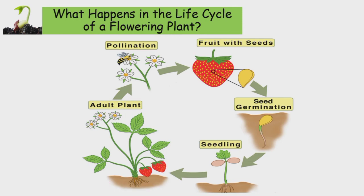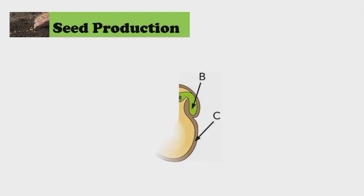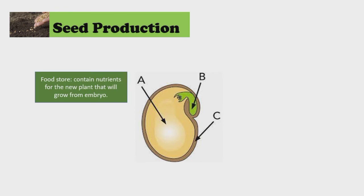Now let's discuss each stage one by one. The first stage is seed production. A seed is made of three main parts: an embryo, seed leaves, and a seed coat. The seed leaves are the food store — they contain nutrients for the new plant that will grow from the embryo.